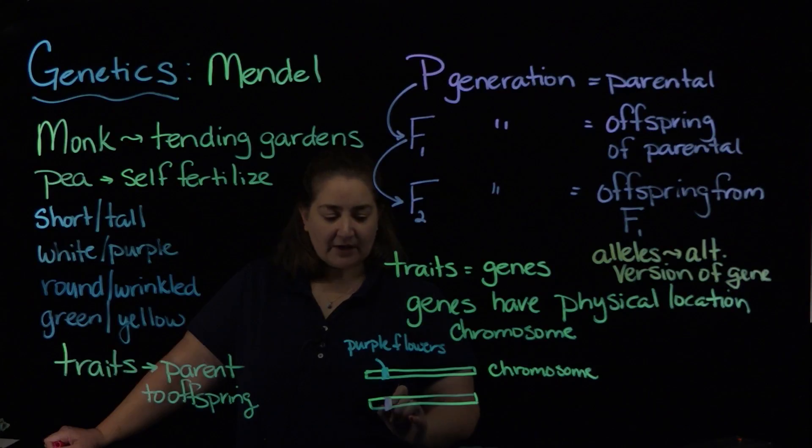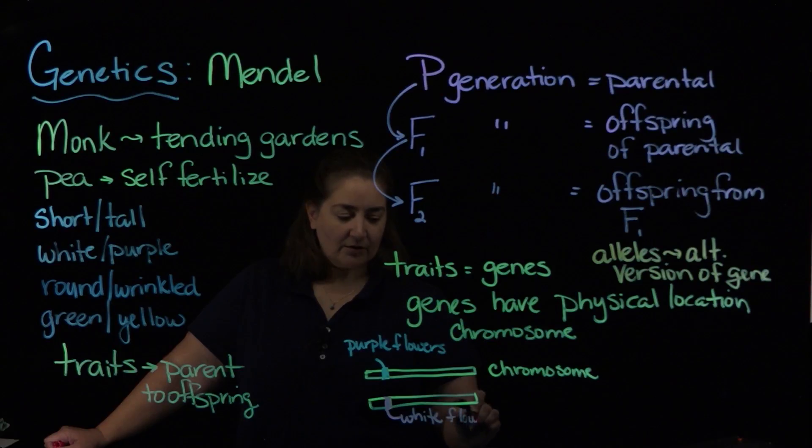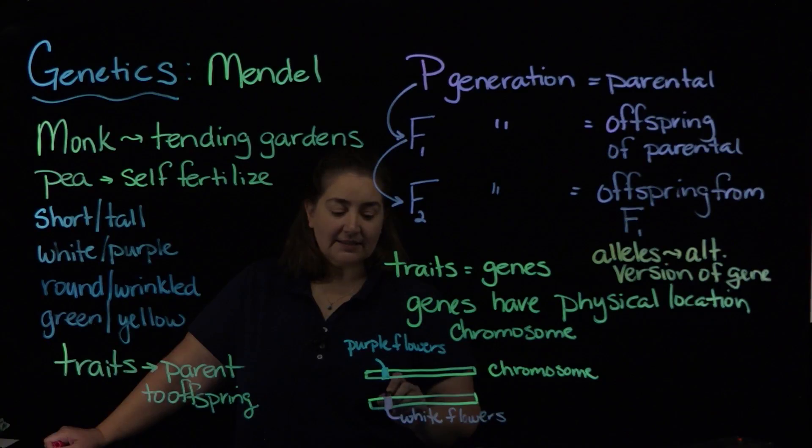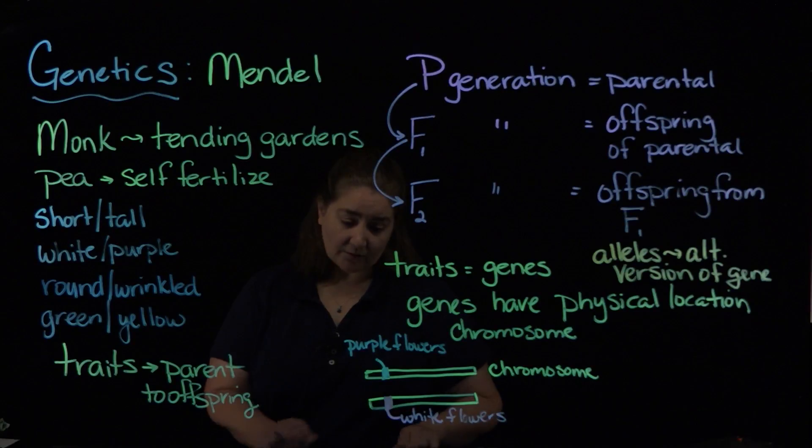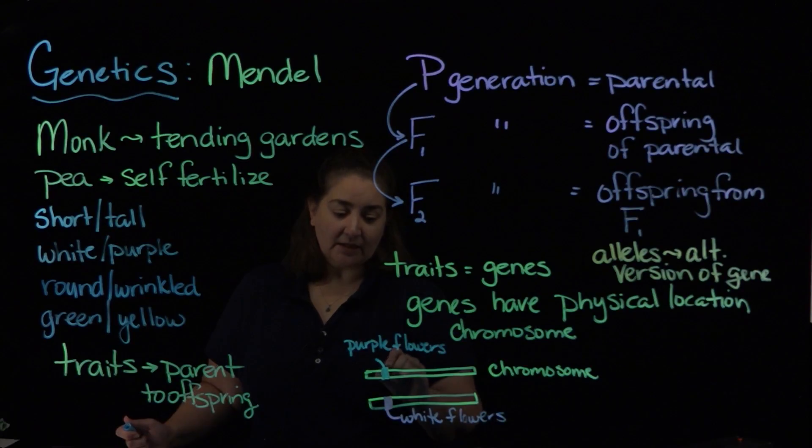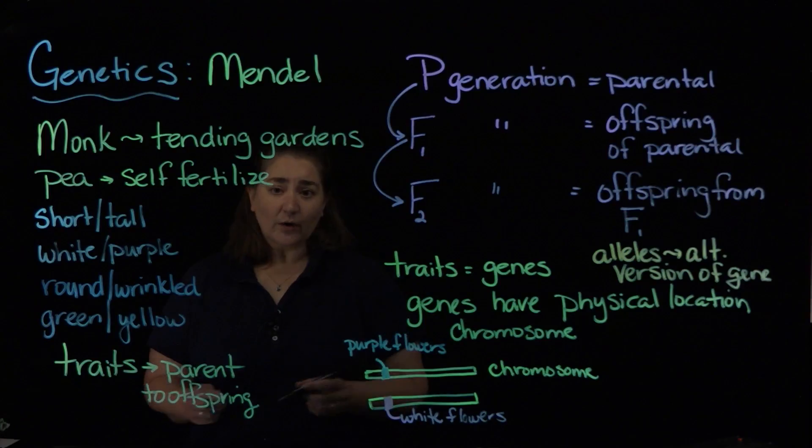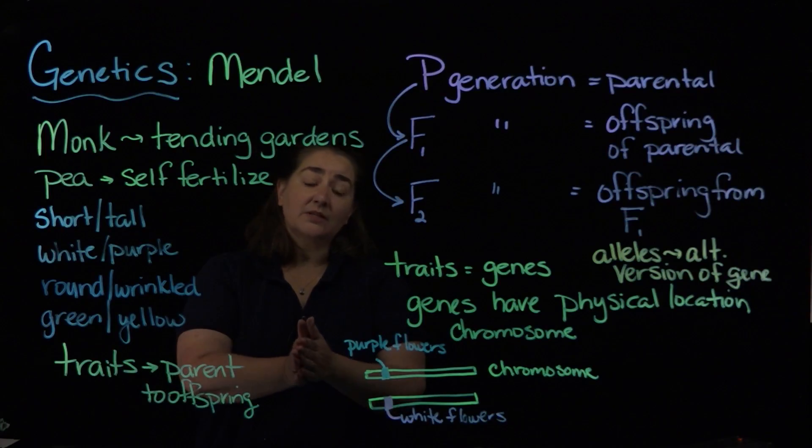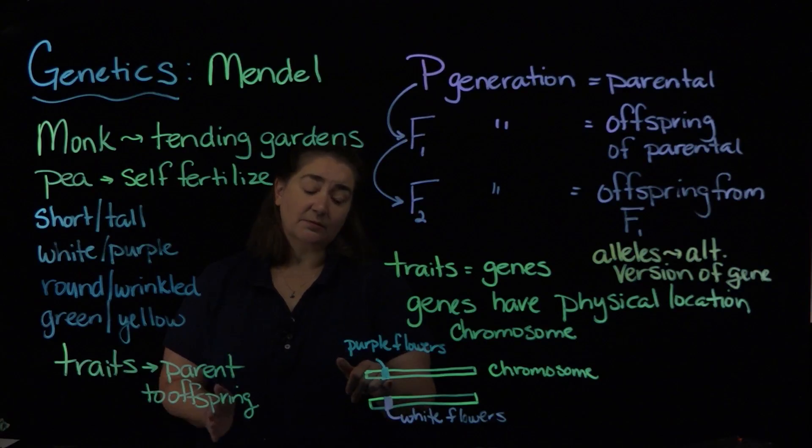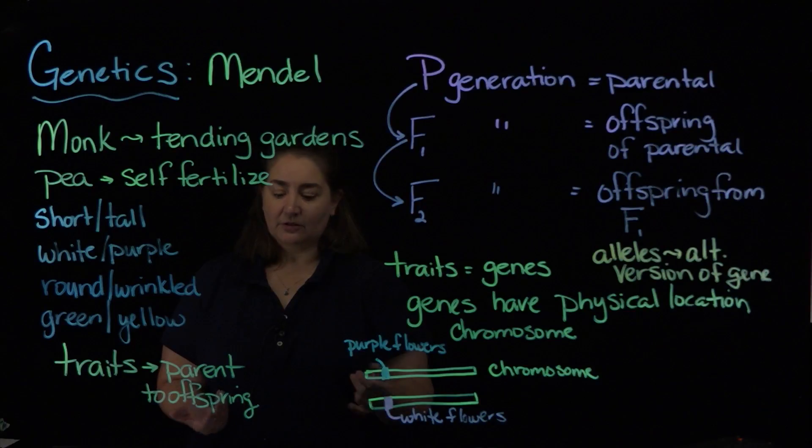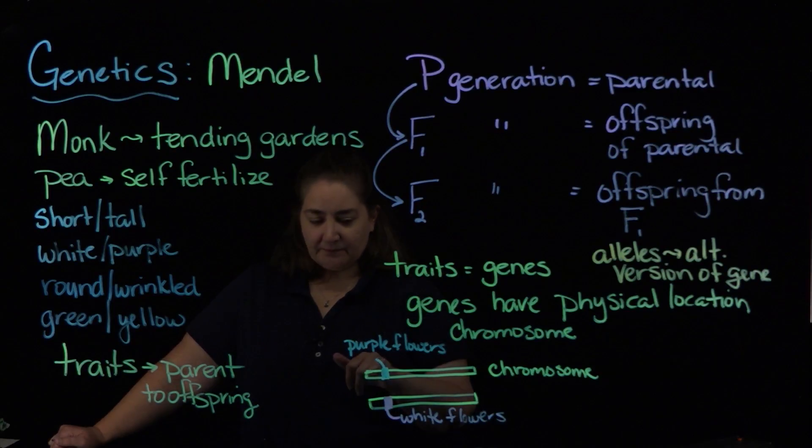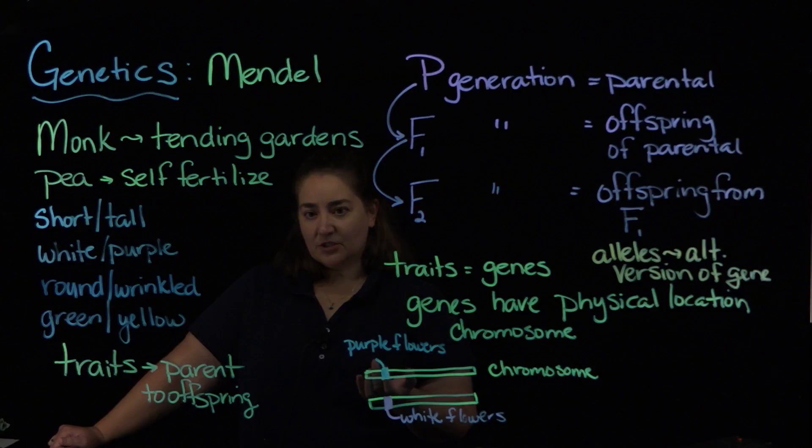If we have this gene here, we might have, or we would have our white flowers. So it's located in the same physical location on the chromosome, but the difference between the purple allele and the white allele would have something to do with the particular DNA sequence in it. So the DNA sequence between the purple flowers is going to be a little bit different than the white flowers. But they would be considered alleles because they're alternative forms of the gene.